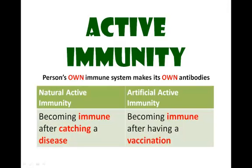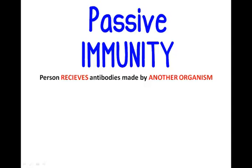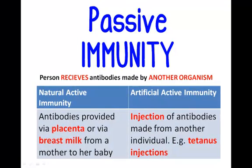An artificial example of active immunity is when you become immune after having a vaccination. Passive immunity is where a person receives antibodies made by another organism — the person's own immune system does not make them. A natural example would be the antibodies provided via the placenta or via breast milk from mother to her baby. An artificial example would be immunity provided by injection of antibodies made from another individual, e.g. tetanus injections.